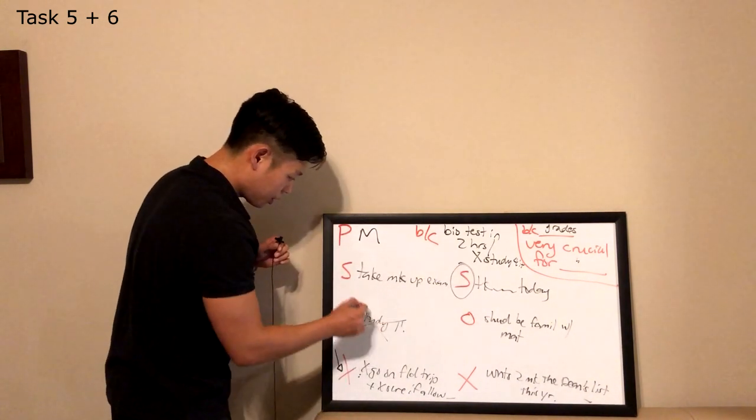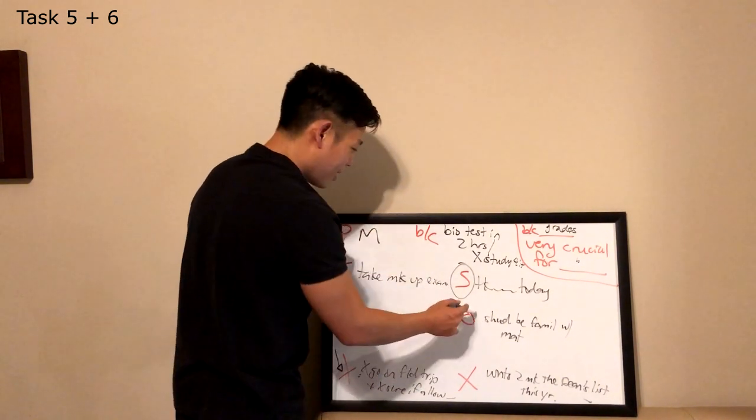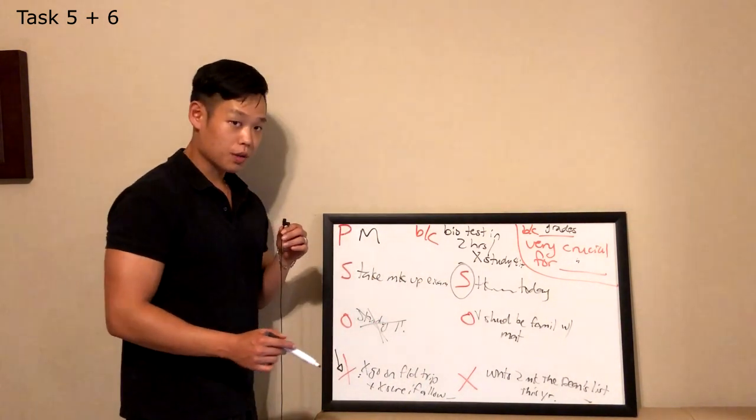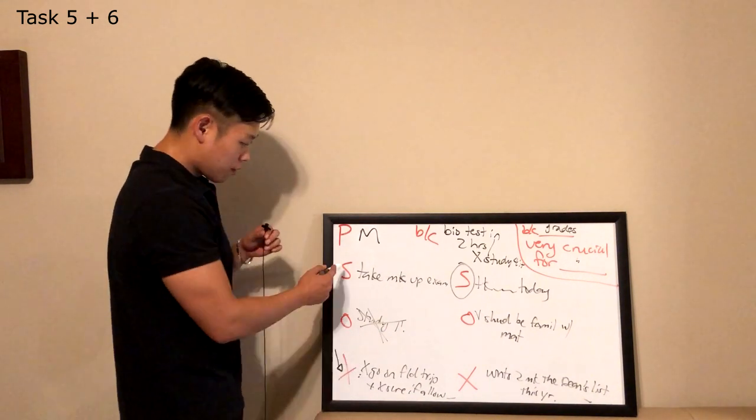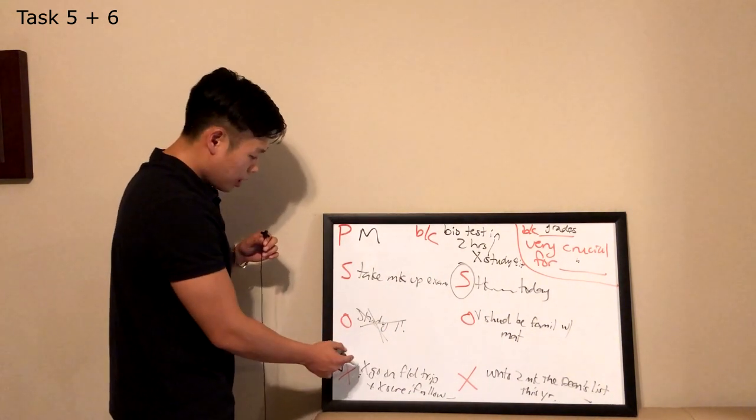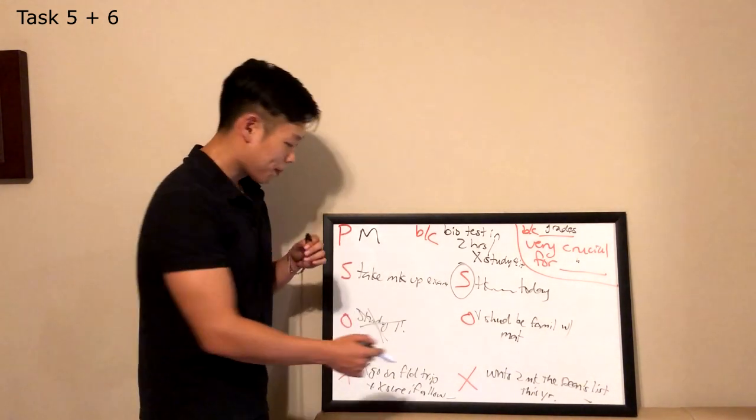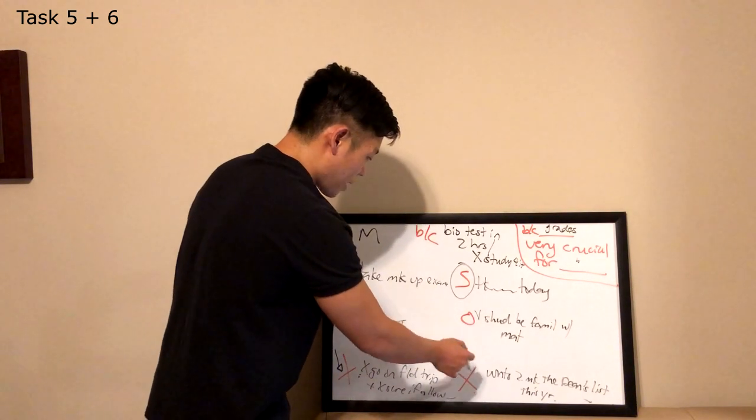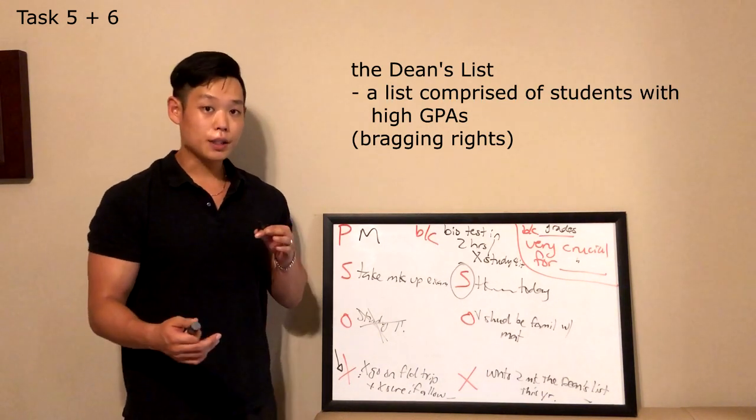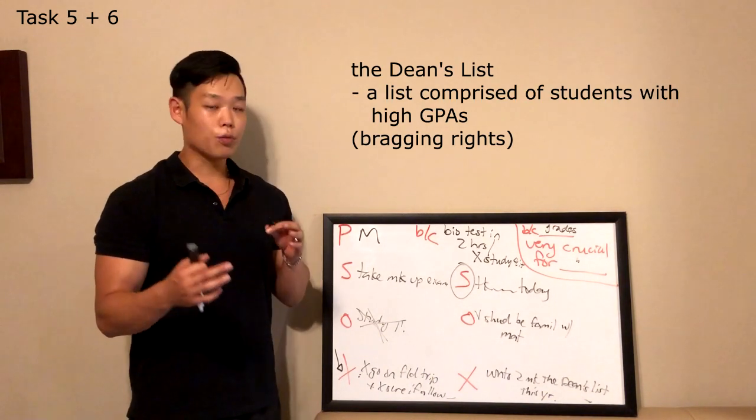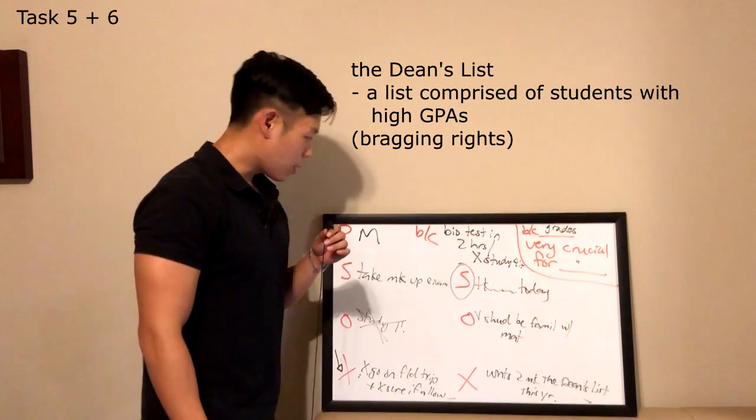We're not going to need this. The upside of our solution is the man should be familiar with the test materials. Now the downside of the first solution is, as I said, he didn't go on the field trip and is not sure if the professor will allow him to take the makeup exam. Now the downside of our solution is the man really wants to make the Dean's list this year. The Dean's list is like first honors in high school. It's a list that students who maintained a really good GPA are mentioned in. All right, now that we know what I'm going to say for my sample response, let's listen to what I've got to say.